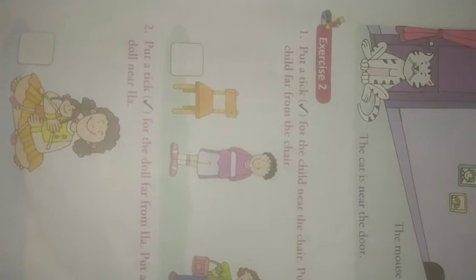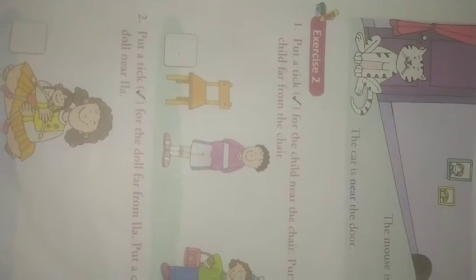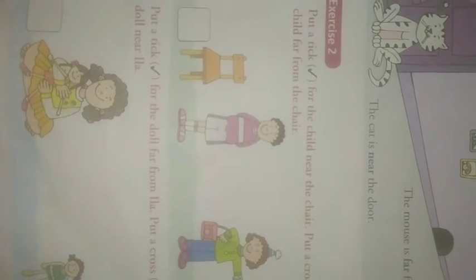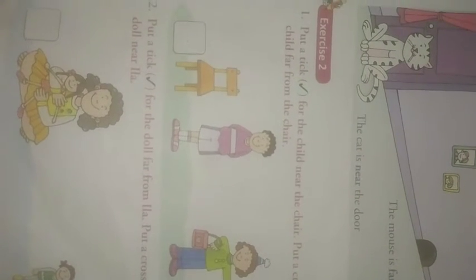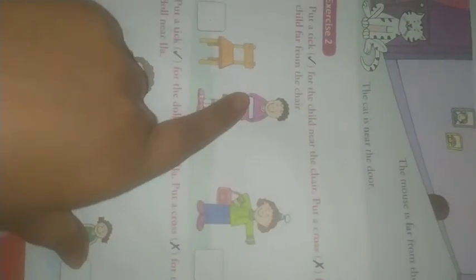Let's start exercise number 2. Put a tick for the child near the chair. So children, you have to put a tick for the child near the chair. Which child is near the chair? This one or this one? Yes, this child is near the chair. So you have to put a tick in this box.